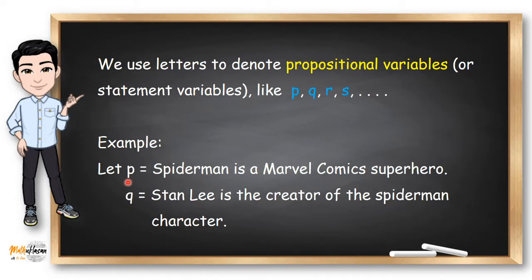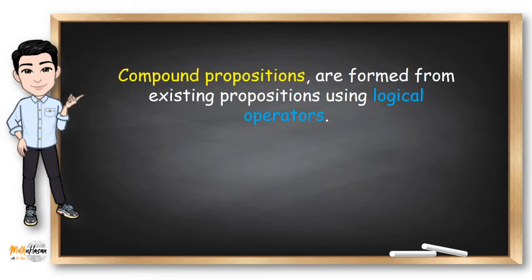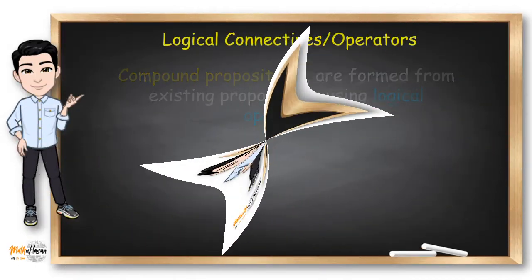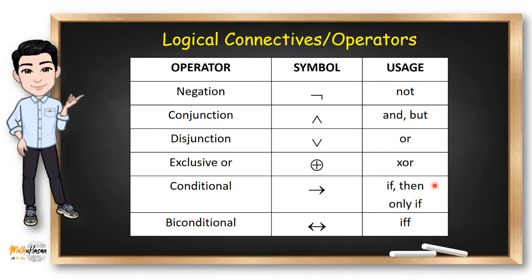For example, let P be the proposition Spider-Man is a Marvel Comics superhero. And Q, Stan Lee is the creator of the Spider-Man character. Compound propositions are formed from existing propositions using logical operators. So, logical operators are words or symbols that join two sentences to produce a new one. And here are the most commonly used logical connectives or operators.